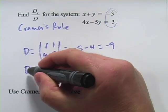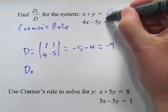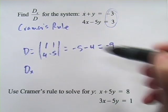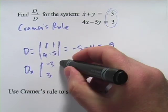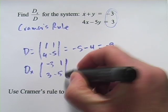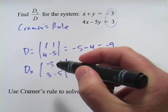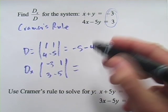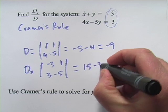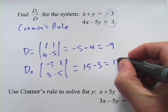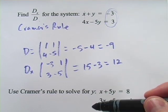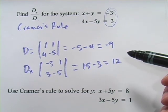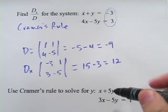Now, big D sub x, we're going to take these guys and sub them in for the x column. So instead of 1 and 4 here, we're going to have negative 3 and 3. And the other part is the same, 1, negative 5. So when we calculate that determinant, that's a positive 15 minus 3, we get 12. And now it's D_x over D, and that is the solution for the x variable in this system of equations.